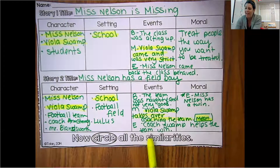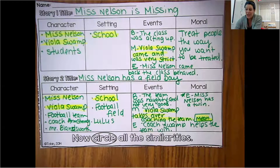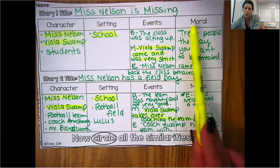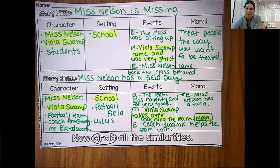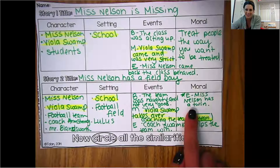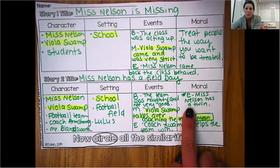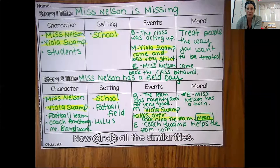And then at the end, Coach Swamp helps the team win. But also we learn something. In the first story we learn a lesson or a moral. There's not really a moral in the second story, but what do we learn? We learn that she has a twin sister. So make sure you put that down also.